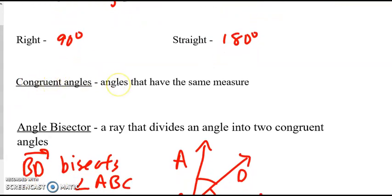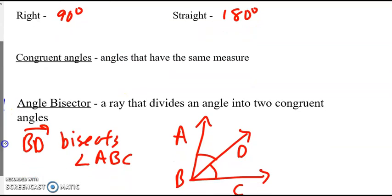Congruent angles: angles that have the same measure, as well as an angle bisector, which is a ray that divides an angle into two congruent angles. So again, a ray divides it into two congruent angles is an angle bisector.